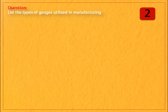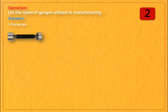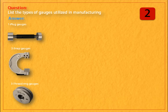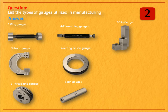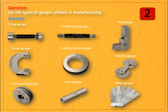Question: list the types of gauges utilized in manufacturing. Answer: plug gauge, snap gauge, thread ring gauge, thread plug gauge, setting master gauge, pin gauge, slip gauge, radius gauges, and filler gauges.